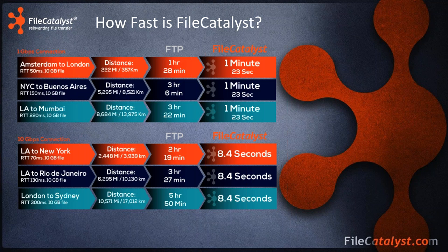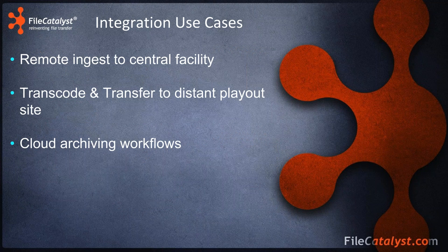On a 10 gigabit connection the numbers are even more dramatic. LA to New York (70ms RTT): FTP takes 2 hours 19 minutes, File Catalyst takes 8.4 seconds. LA to Rio (130ms RTT): FTP takes 3 hours 27 minutes, File Catalyst takes 8.4 seconds. London to Sydney (300ms RTT): FTP takes 5 hours 50 minutes, File Catalyst takes 8.4 seconds. Even transferring a 10 gigabyte file from London to Sydney on a 10 gigabit connection takes just 8.4 seconds with File Catalyst.